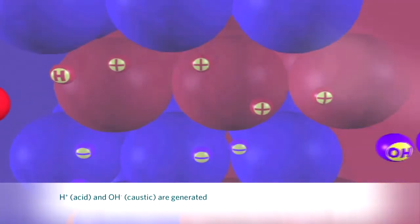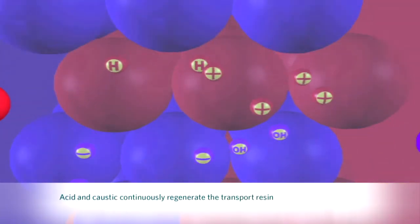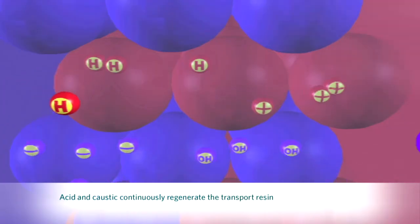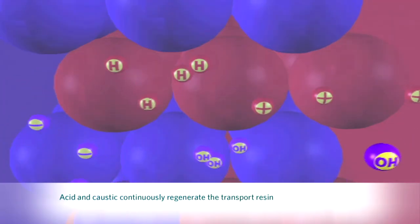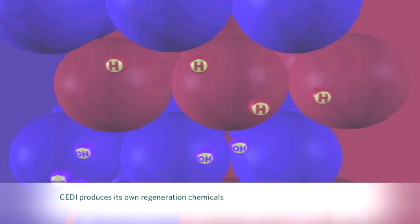The acid and caustic generated in the module regenerate the resin beads by replacing other trace ions remaining. The attachment of hydrogen and hydroxide ions to the resin beads is exactly what happens to resin beads when acid and caustic are used for regeneration in conventional deionization systems.